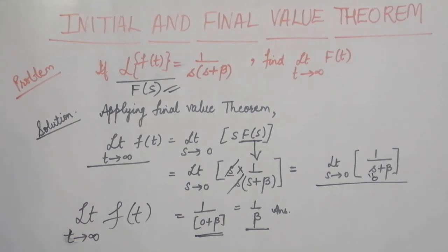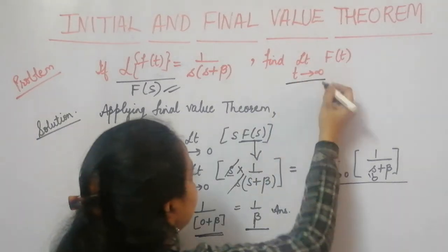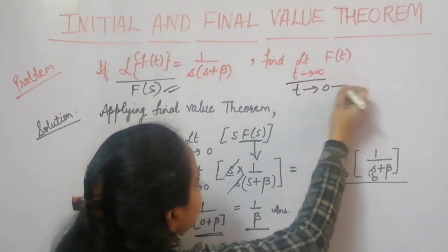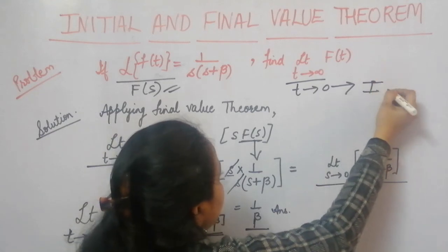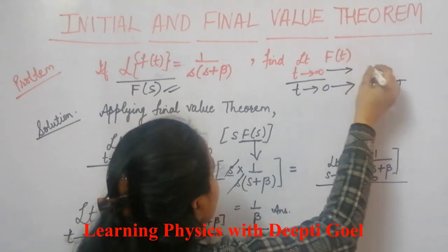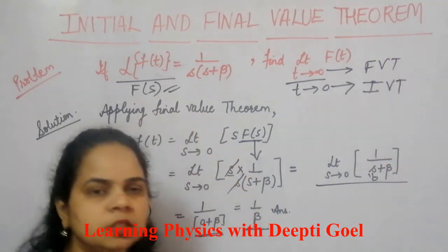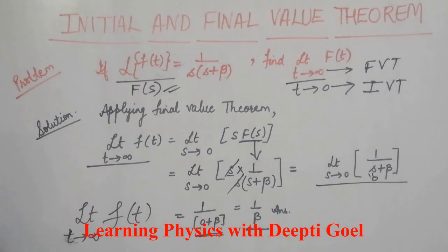You need to look at the question and determine whether the limit t is tending to infinity or t is tending to 0. If t is tending to 0, apply the initial value theorem. If t is tending to infinity, apply the final value theorem. This is how you judge which theorem to apply. Thank you.